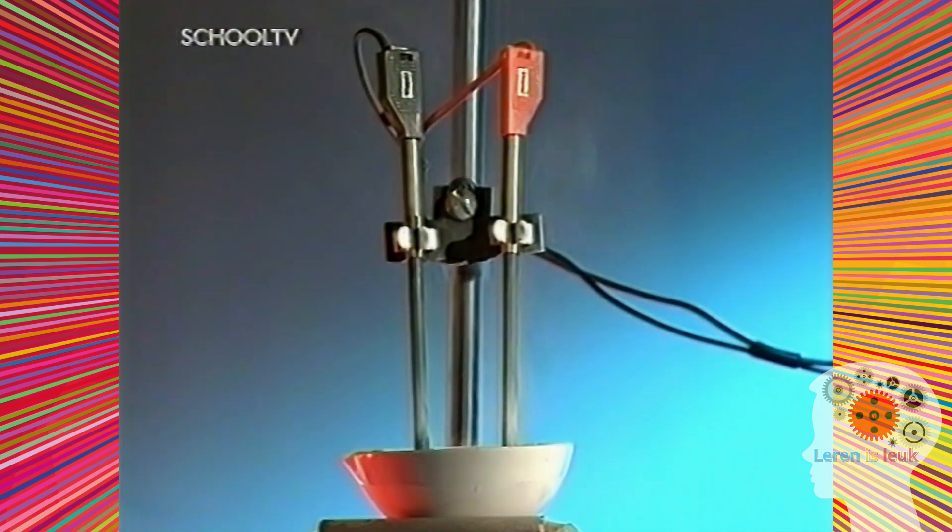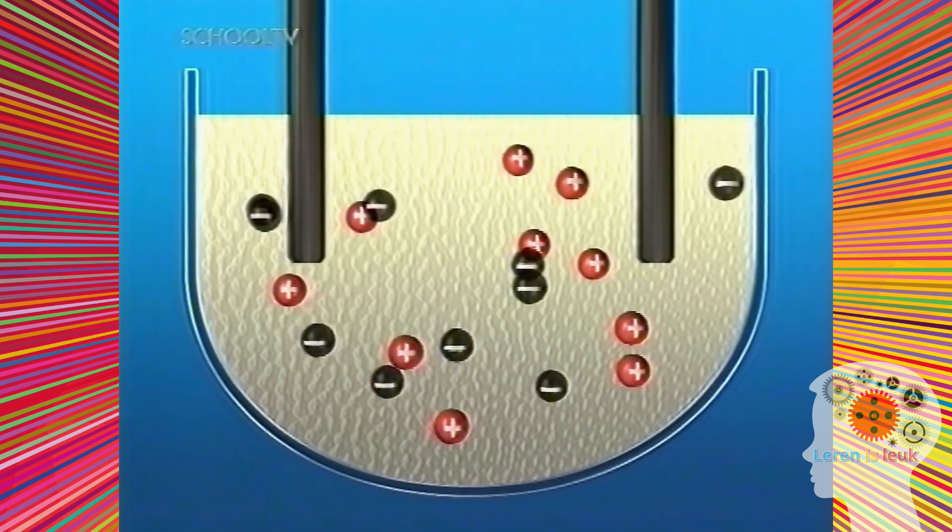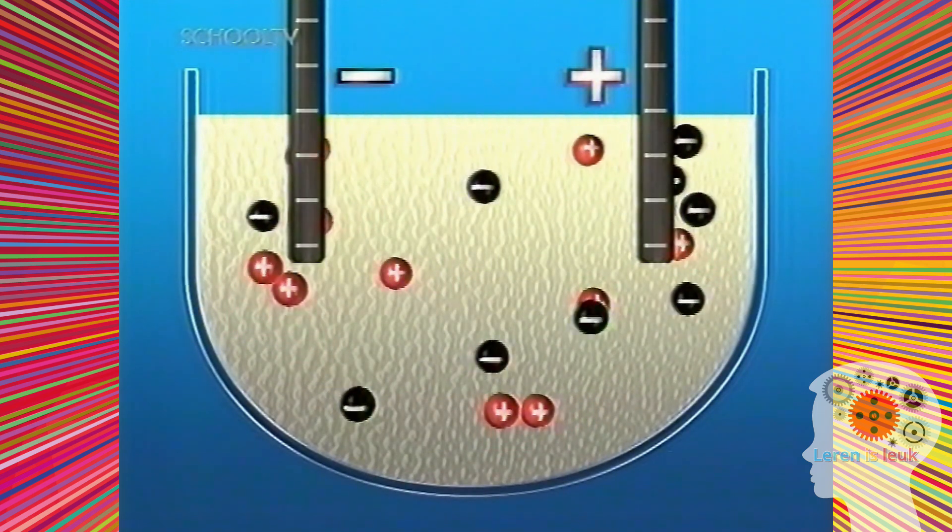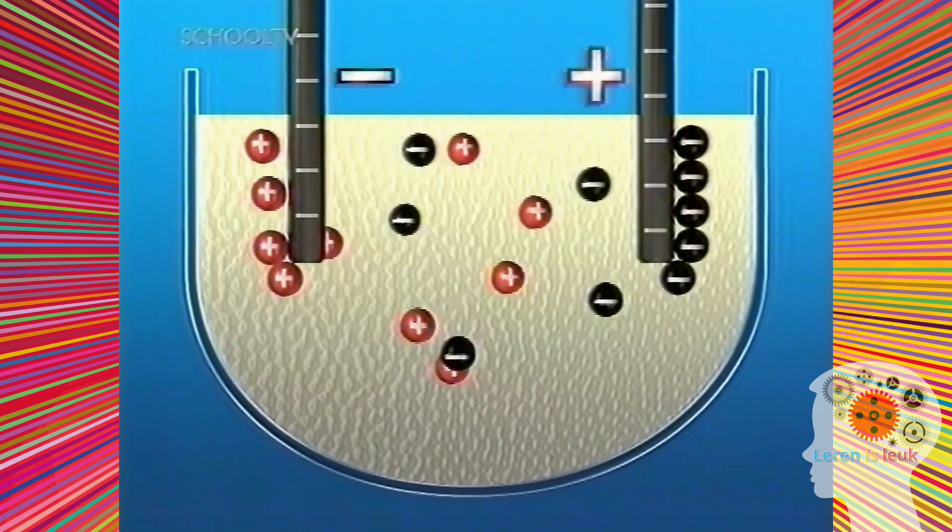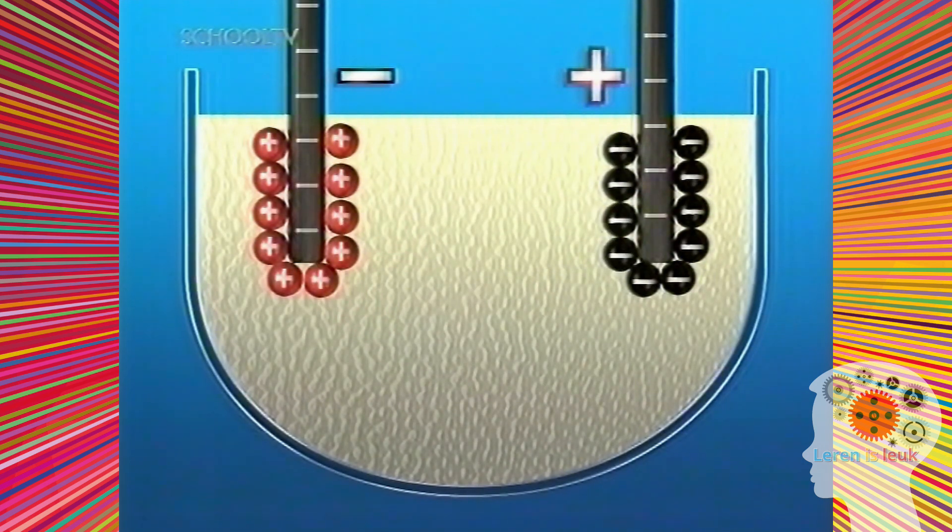Om na te gaan wat er gebeurt, moet je je voorstellen dat je de geladen deeltjes, de ionen, in de verbinding kunt zien. Er zijn positieve loodionen en negatieve bromide-ionen. Als de stroom wordt ingeschakeld, worden de loodionen aangetrokken door de negatieve elektrode. De bromide-ionen worden aangetrokken door de positieve elektrode.